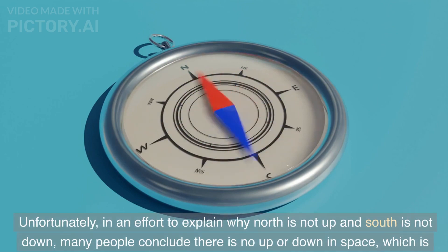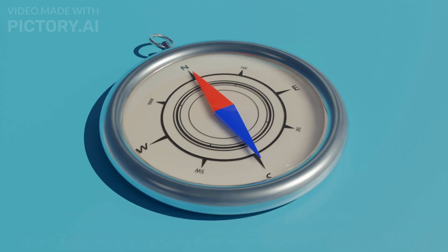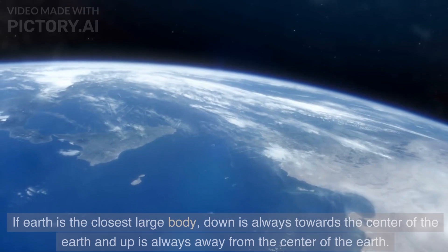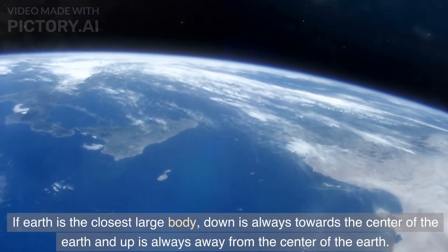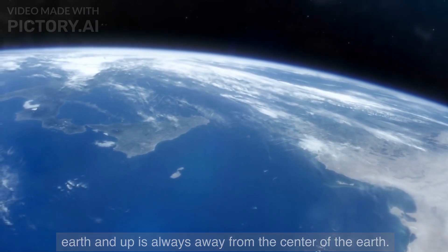Unfortunately, in an effort to explain why north is not up and south is not down, many people conclude there is no up or down in space, which is clearly wrong. If Earth is the closest large body, down is always towards the center of the Earth and up is always away from the center of the Earth.